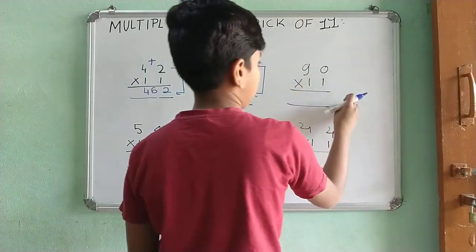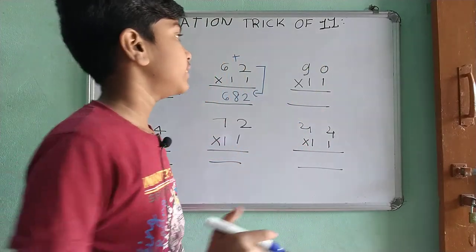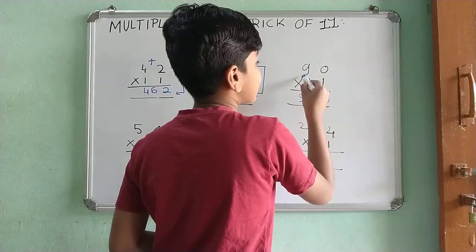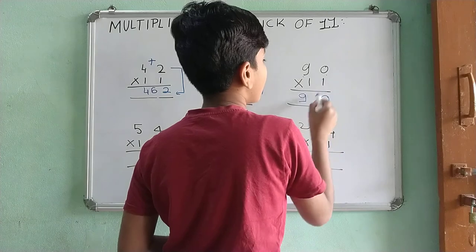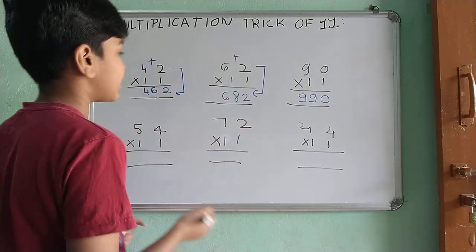Let's see this example. 90 multiplied by 11. Now, in this, write 90. And this 9, 0. 9 plus 0 is 9. So, your correct answer will be 990.